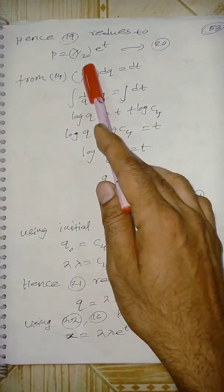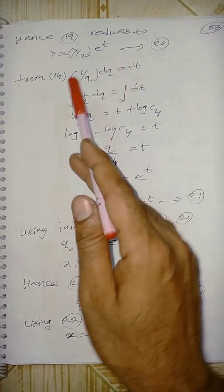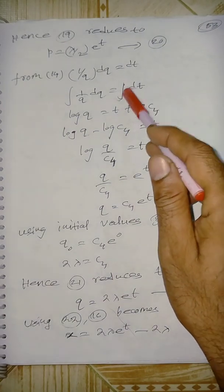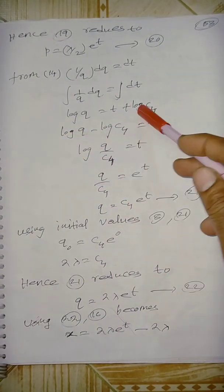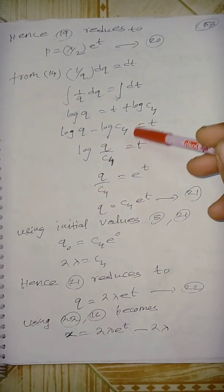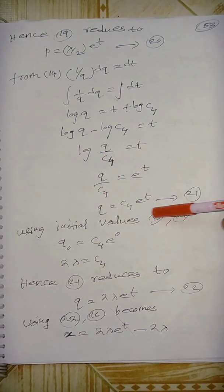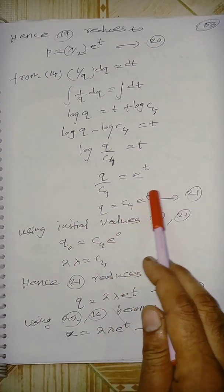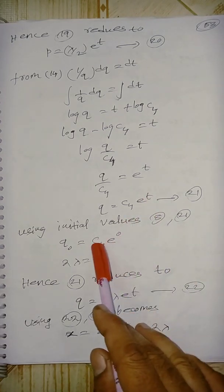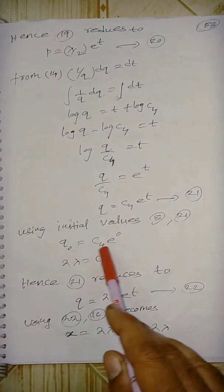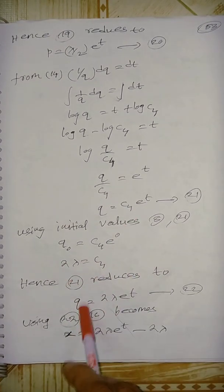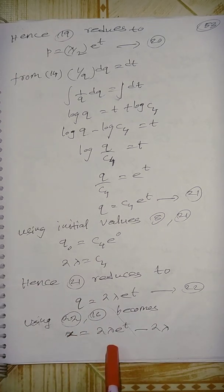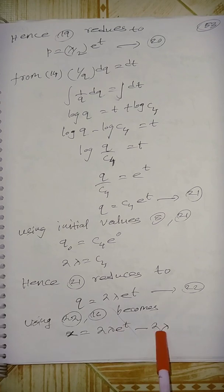From equation 14, dq/dt = q. Using variable separable: (1/q)dq = dt. Integrating: log q = t + log C4. So q = C4·e^t. Using initial values: q0 = C4·e^(t0) = C4, so C4 = 2·lambda. Therefore q = 2·lambda·e^t.